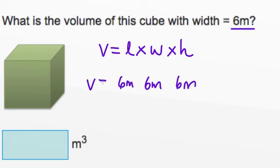This means the volume equals 6 meters times 6 meters times 6 meters. All we have to do is multiply these three numbers, and if you do this, you'll see that the volume equals 216 cubic meters.